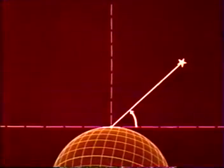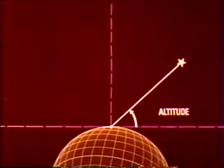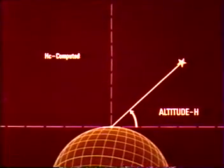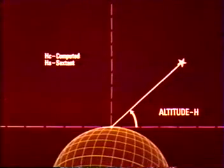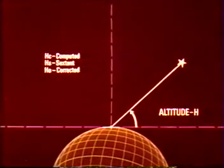The measured angle of a celestial body from the celestial horizon is called altitude. It is indicated by the letter H. Altitude, when computed, is called HC. It is called HS when it is sighted through a sextant. And it is called HO when the sextant reading is corrected for instrument and observation error.